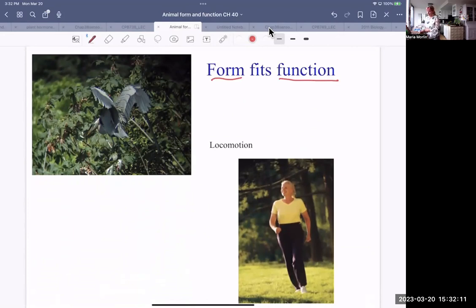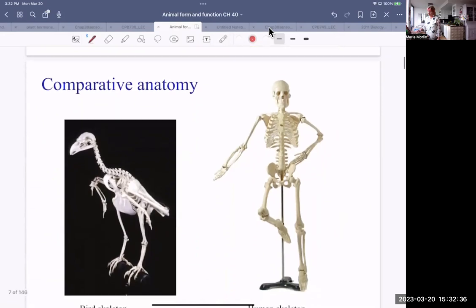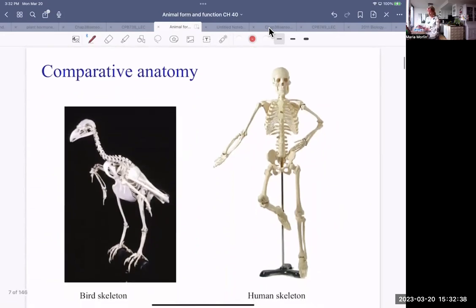In the case of locomotion, for example, we might be studying the locomotion of various animals. Birds have wings, and since we're doing a human bird comparison, humans have legs. So how are they adapted to their particular environment? Let's take a look. Some things are quite similar. These are called homologous structures. For example, the femur.